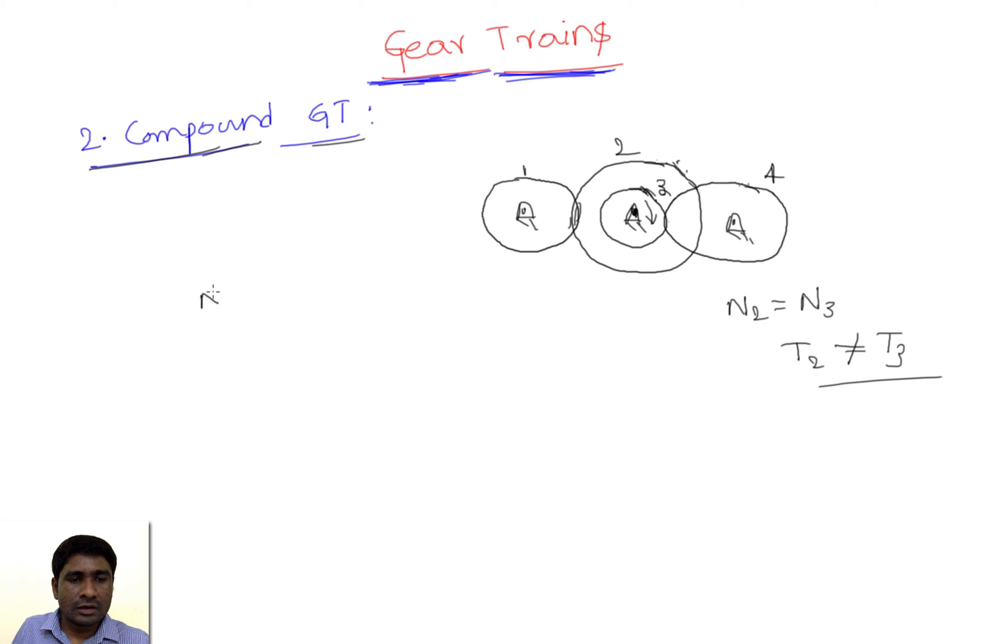Now I can write N1/N2 = T2/T1, because gears 1 and 2 are engaging. Then, N3/N4 = T4/T3, because gears 3 and 4 are engaging.